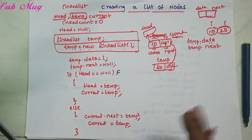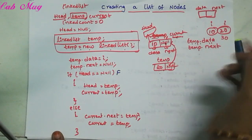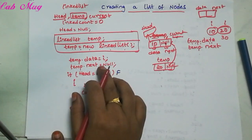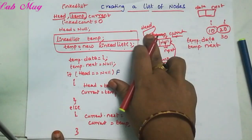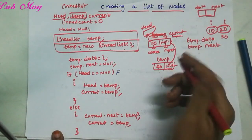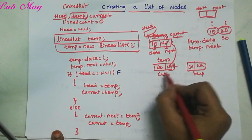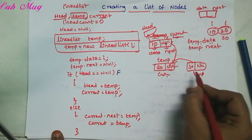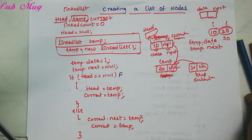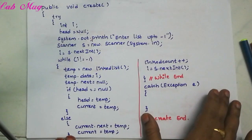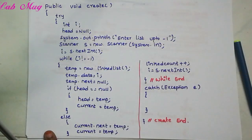Again, to create another node — for example 30 — we do: temp equals new LinkedList(), temp.data equals 30, temp.next equals null. Then head equals null is false again since head already has the first node. So in the else part: current.next equals temp, linking the new node. Then current equals temp, moving current to the new node. We repeat this logic for every new node we create.